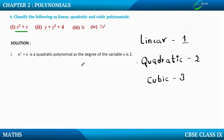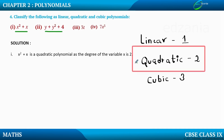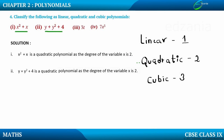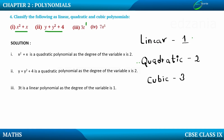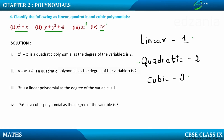In the second example, the highest power of y is 2, so y plus y squared plus 4 is a quadratic polynomial. The next expression is 3t: the power of t is 1, so 3t is a linear polynomial. In the last example, the power of x is 3, so 7x cubed is a cubic polynomial, as the degree of the variable is 3.